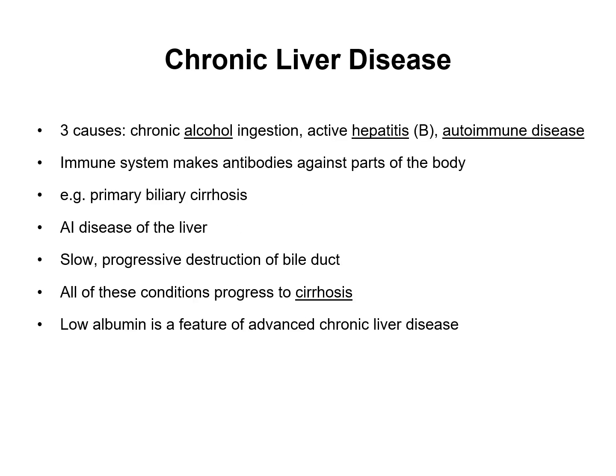Chronic liver disease can result from three main causes: chronic alcohol ingestion, active hepatitis B, and autoimmune disease — where the immune system makes antibodies against parts of the body. An example is primary biliary cirrhosis, which is a slow progressive destruction of the bile duct. This can progress to cirrhosis — scarring of the liver — and a common symptom is low albumin, indicating advanced chronic liver disease.